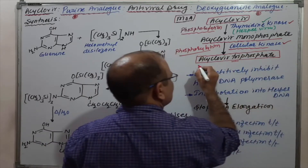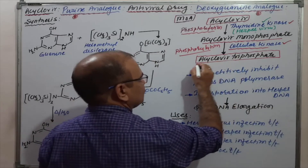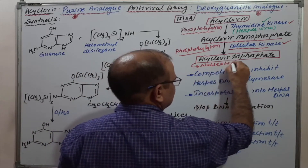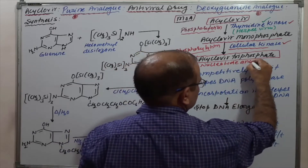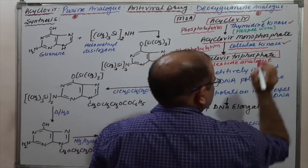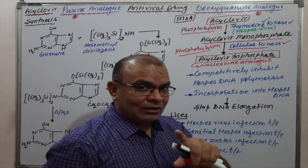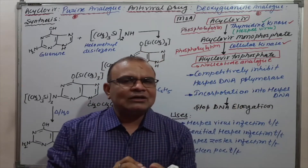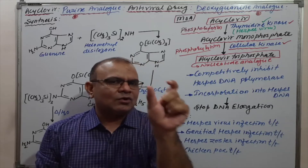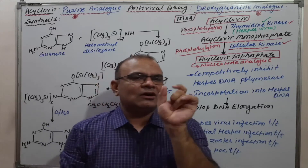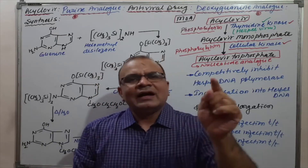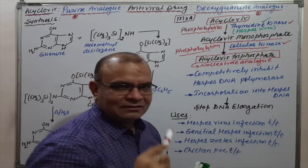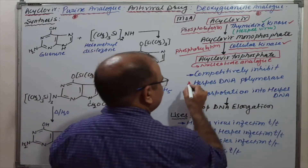Acyclovir triphosphate is basically known as a nucleotide analog. A nucleotide is the monomer unit of DNA as well as RNA. Since herpes virus is a DNA virus, this analog inhibits it by two methods.